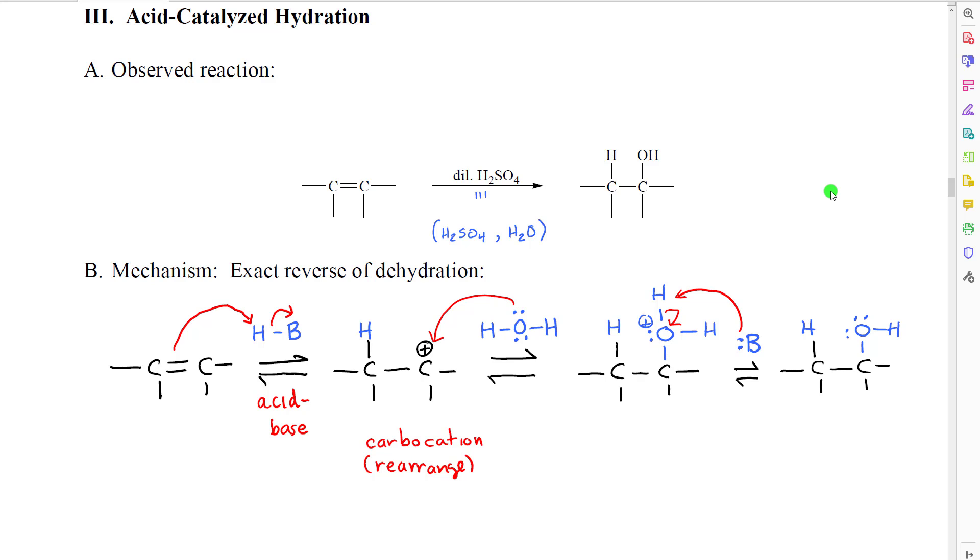We're next going to look at three reactions that accomplish on an overall level a very similar transformation, which we call a hydration. In a hydration reaction, the alkene absorbs a hydrogen on one carbon and a hydroxyl group on the other.